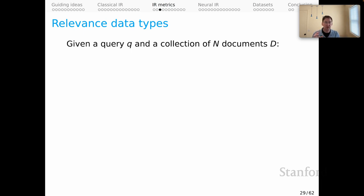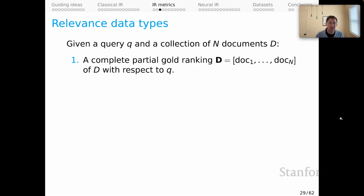Given a query q and a collection of N documents D, one data type that you might have would be a complete partial gold ranking of all the documents with respect to your query, and you would need such rankings for every query in your data set. That would obviously be inordinately expensive to do with all human labeling, so most likely, if you have a data set like this, the rankings were automatically generated via some process.